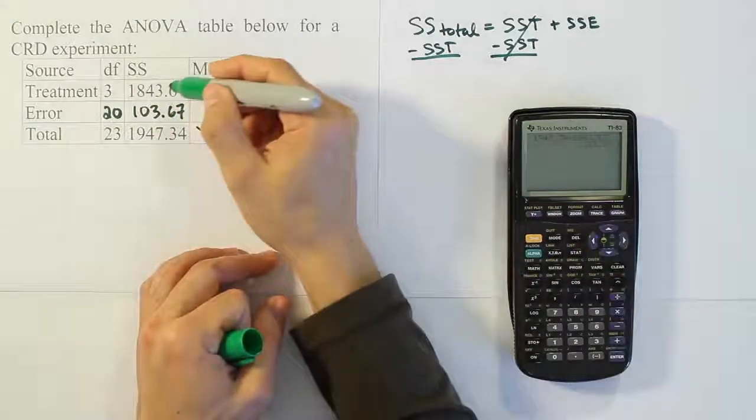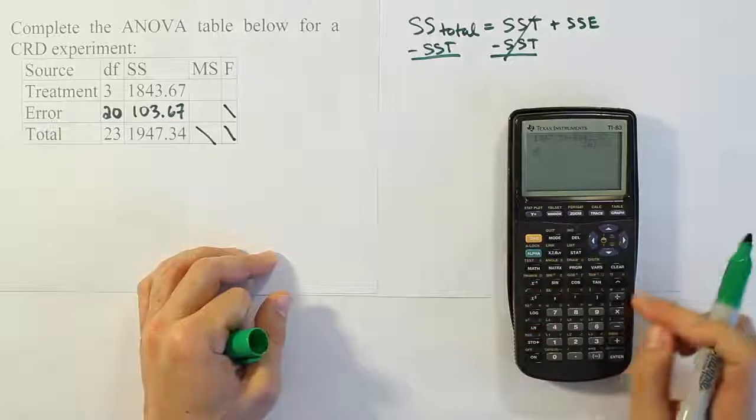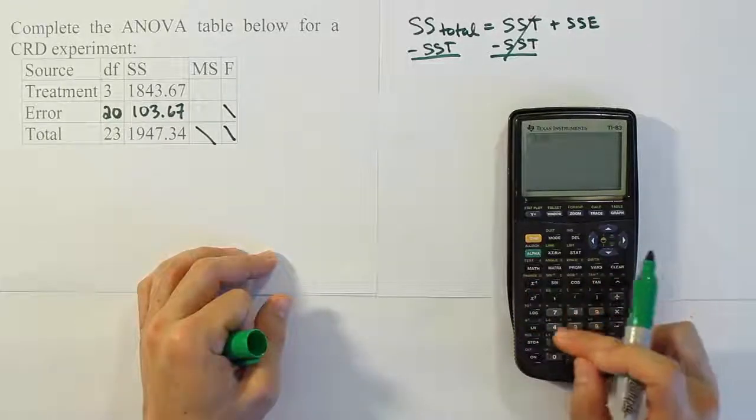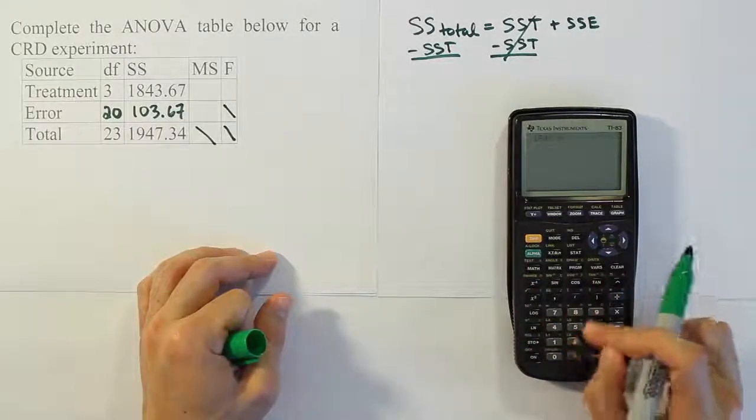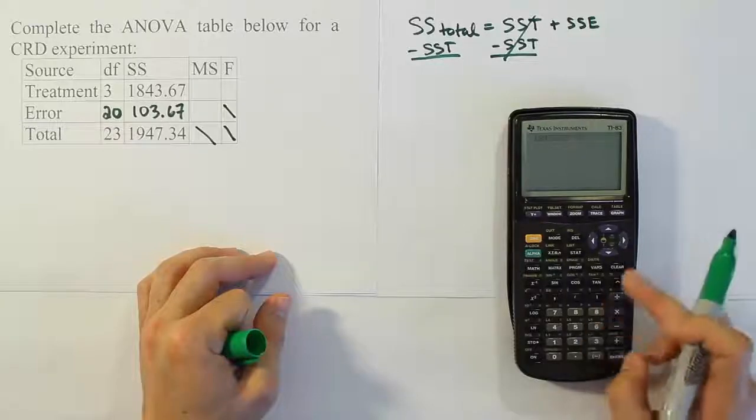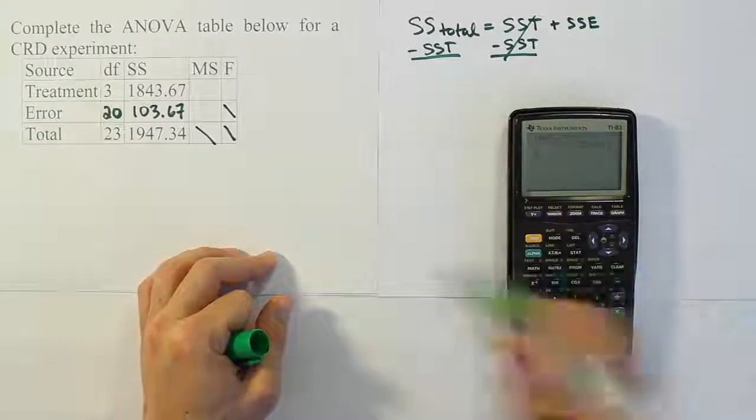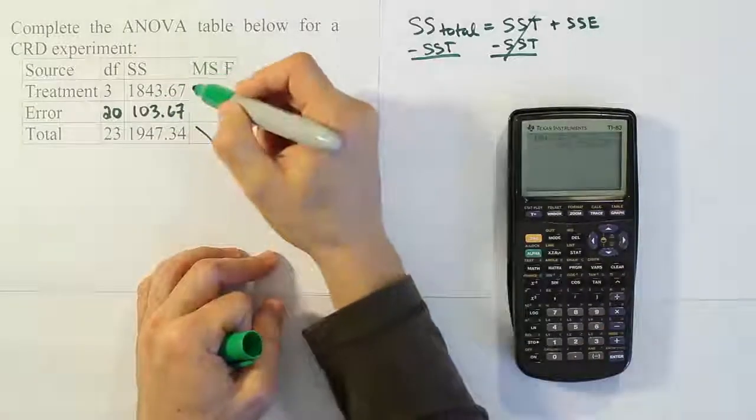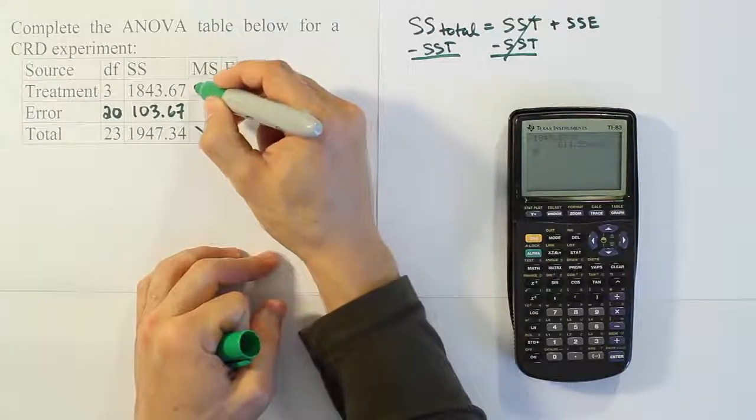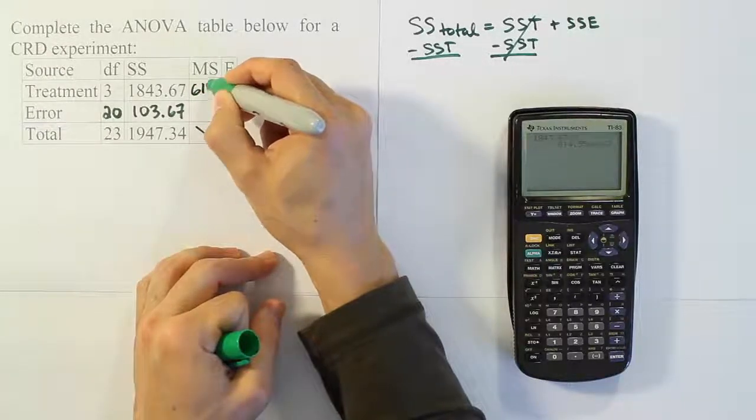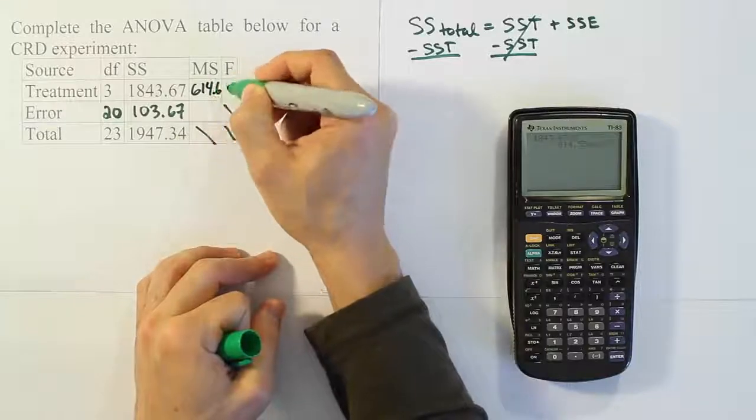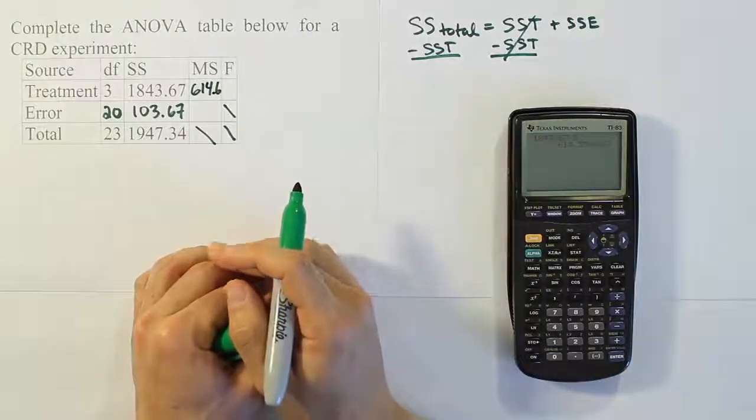So let's do MST. That means we have to divide 1843.67 by 3. So we're going to do 1843.67 divided by 3. And we get 614.56, right? 614.56. So I'm going to do 614.6 just for space, because we don't have that much room here in the table.